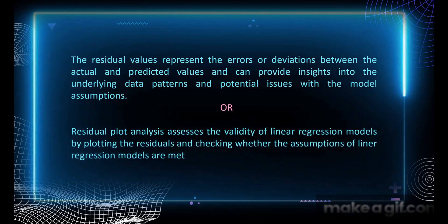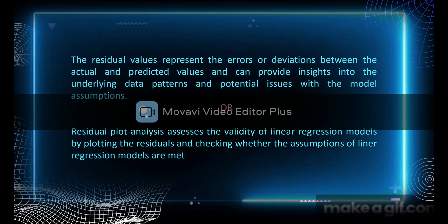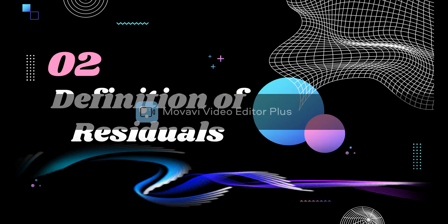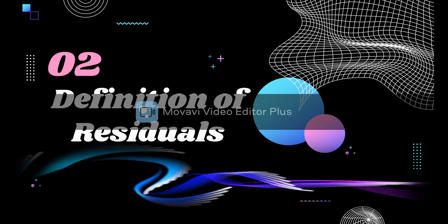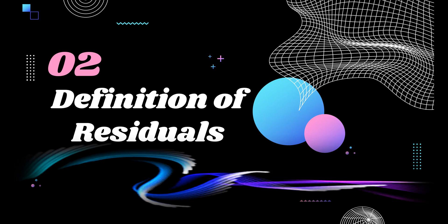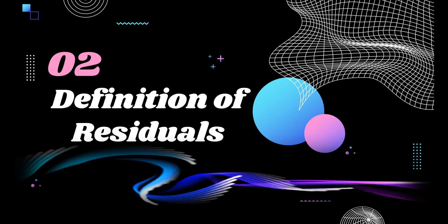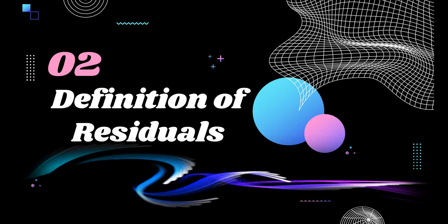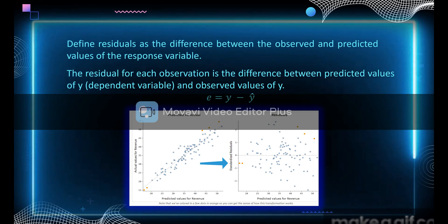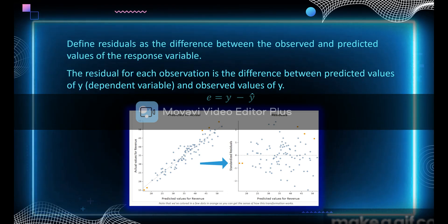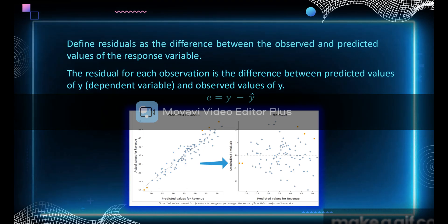Moving forward to the definition of residuals — we can define residuals as the difference between observed and predicted values of the response variable. The residual for each observation is the difference between predicted values of y and observed values of y. Here we have the equation: e is equal to y minus y-hat, where e stands for error, y stands for actual values, and y-hat stands for predicted values.